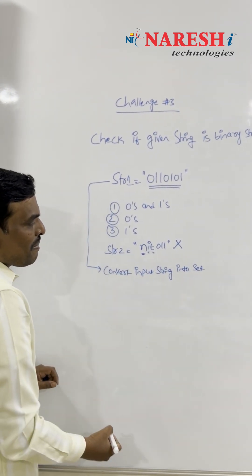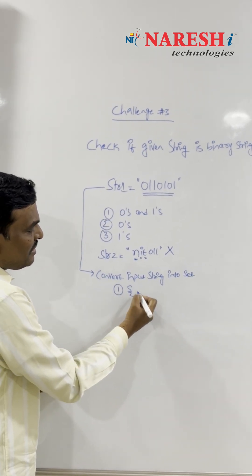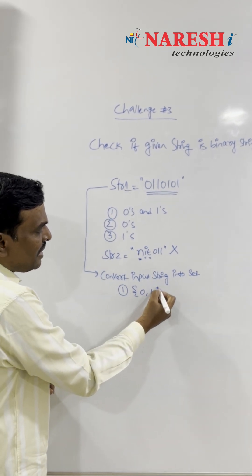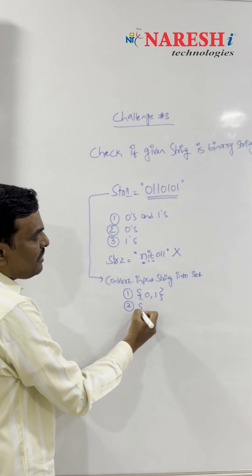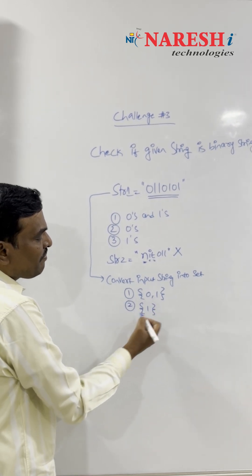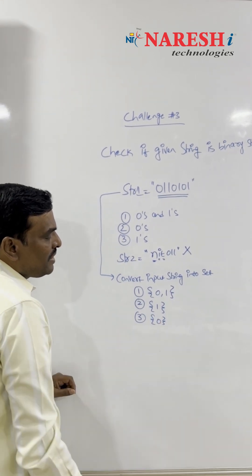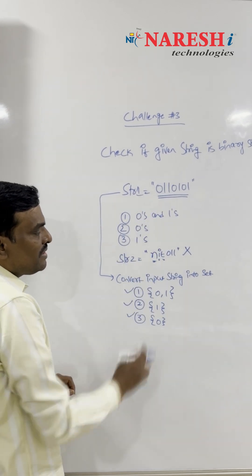Once you convert the input string into a set, you compare the converted set with another set which consists of zeros and ones, a second one which consists of only one, and a third one which consists of only zero. If it is equal to any one of these, you can say the string contains only binary digits.